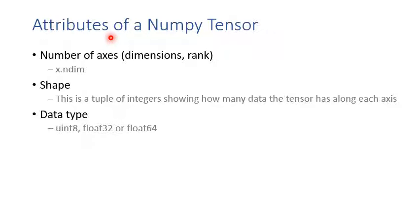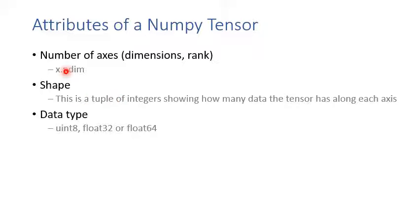NumPy tensors have important attributes. First, ndim gives the number of axes, also called rank. Second, shape is a tuple of integers showing how many elements the tensor has along each axis — very useful. Third, dtype gives the data type: float32, float64, etc. You can specify the data type of a NumPy tensor.